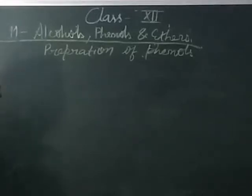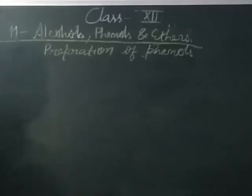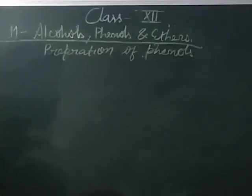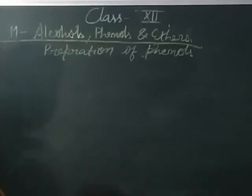We will study the preparation of phenols, which is the topic of chapter 11. We have done the preparation of alcohols, and today we will do the preparation of phenols. Phenol is generally also known as carbolic acid, and it was first isolated from coal tar. Phenol is commercially produced synthetically in the laboratory. Phenols are prepared from benzene derivatives by any of the following methods.